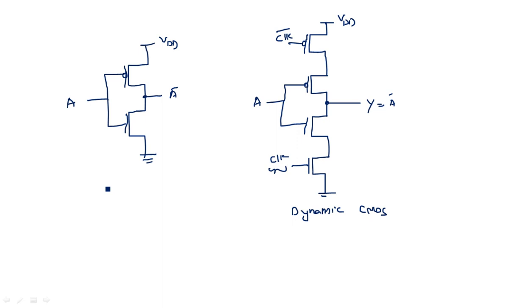Dynamic CMOS circuit examples include domino logic and dynamic logic, because they have a clock signal at the input. The first circuit — without any clock signal — is simply a static CMOS logic circuit design. This is the basic difference between static CMOS and dynamic CMOS circuit design. Let us start with static CMOS circuit design.